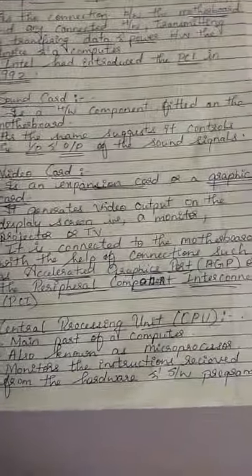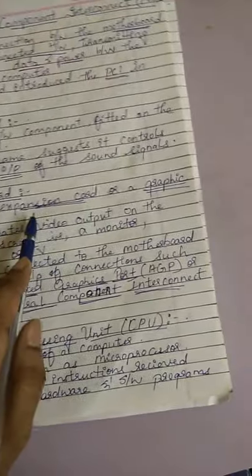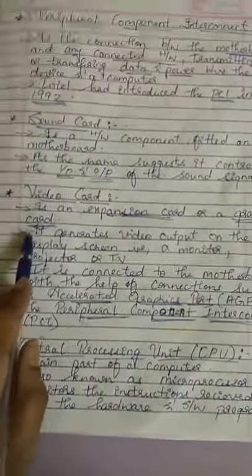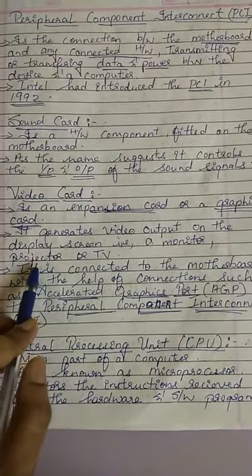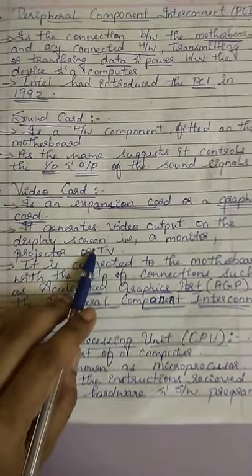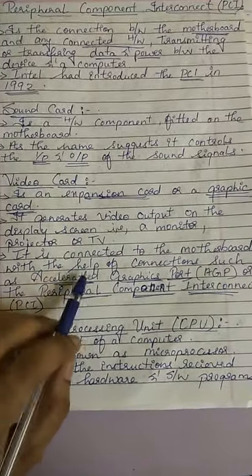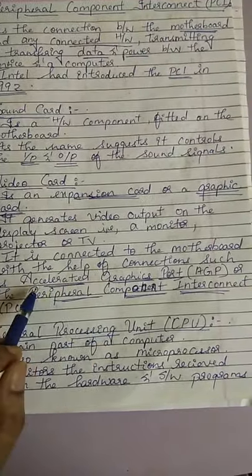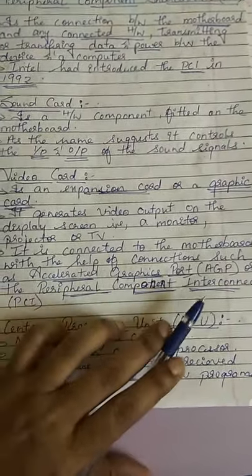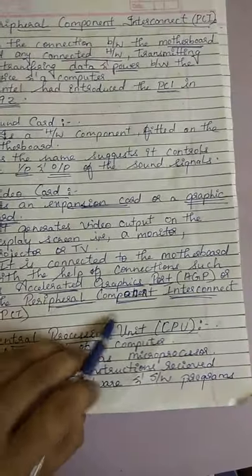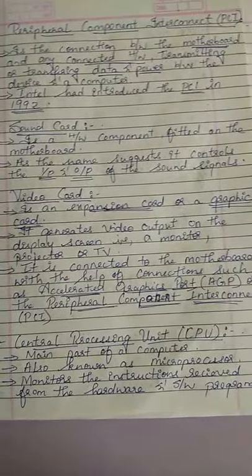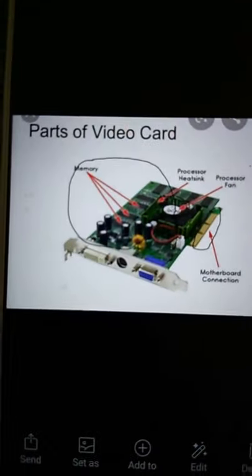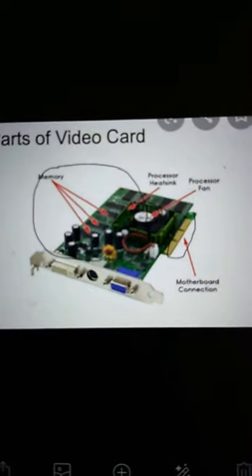The video card is also called as an expansion card or a graphic card. It generates video output on the screen — it may be either your projector, a monitor, or a TV. It is connected to the motherboard with the help of AGP and PCI. Here is your video card — look properly, this is a video card.